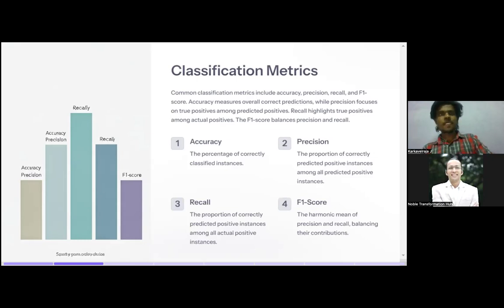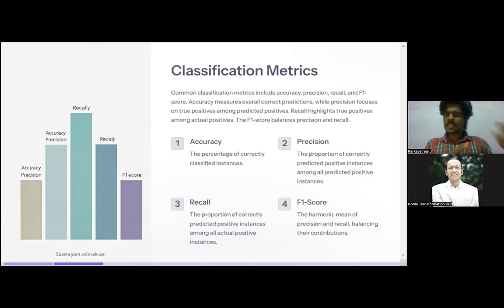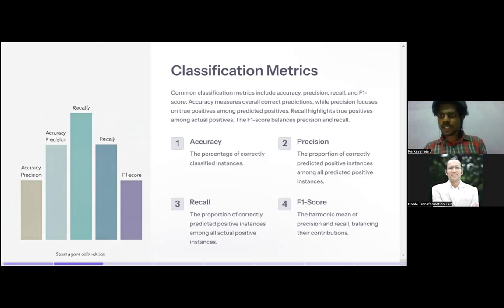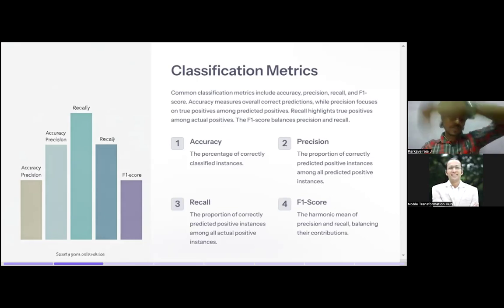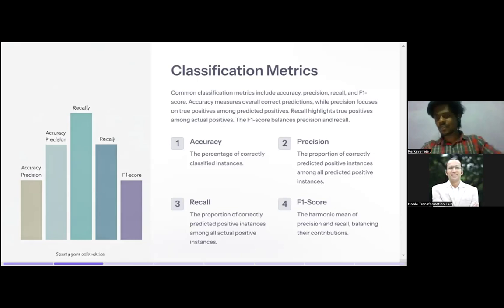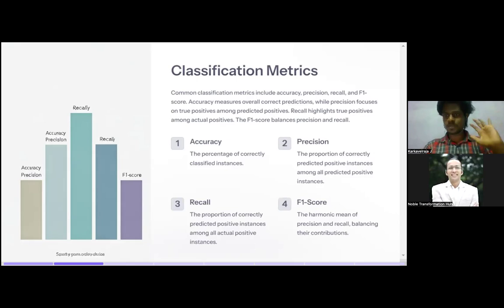Recall is the proportion of correctly predicted positive instances among all actual positive instances. From the entire dataset, how many positive instances are predicted correctly based on actual data — that is recall. F1 score is the harmonic mean of precision and recall, balancing their contribution. Precision focuses only on the positive class, while recall considers how many actual positives are captured. When you combine these two things, you get a balanced metric — that is the F1 score. These are the metrics used to measure classification performance.